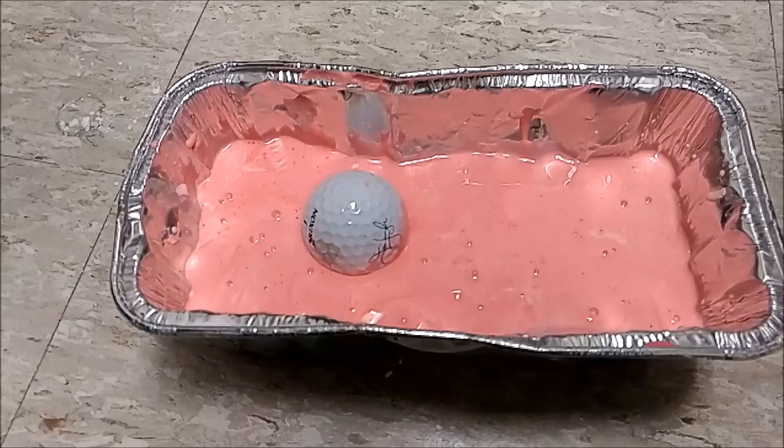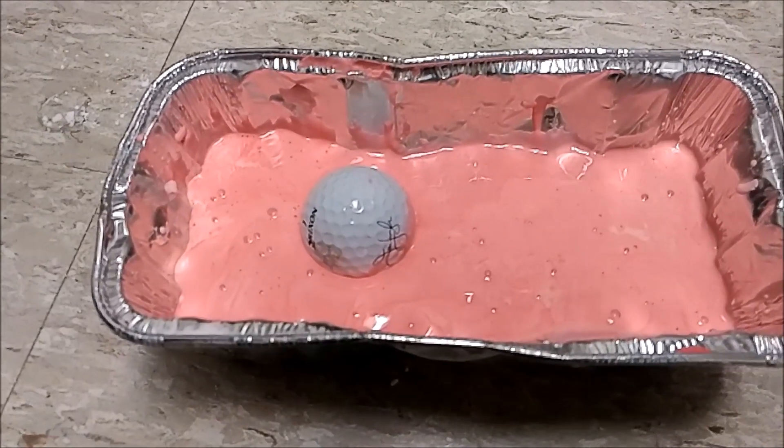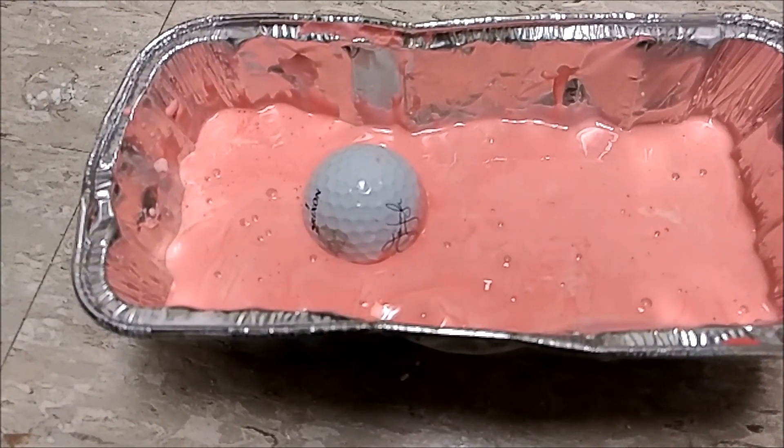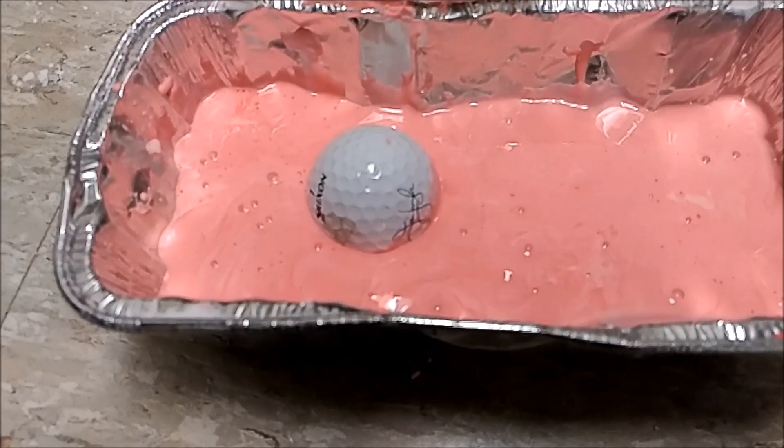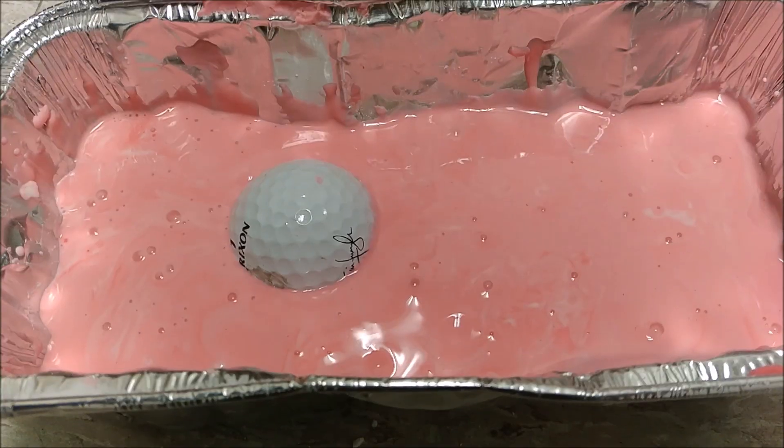It is now allowed to sink because its velocity is very slow and the corn starch particles have more time to move out of the way. After some time, the golf ball will be almost completely submerged.